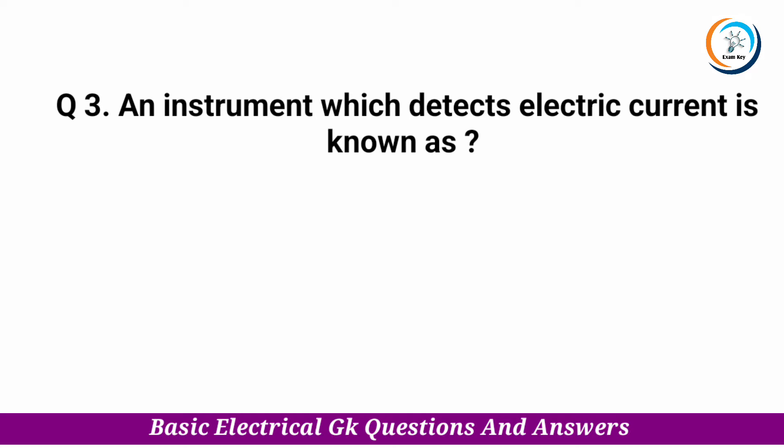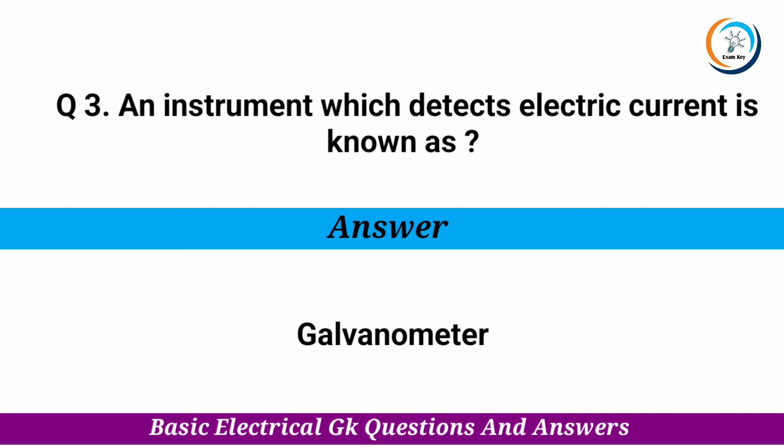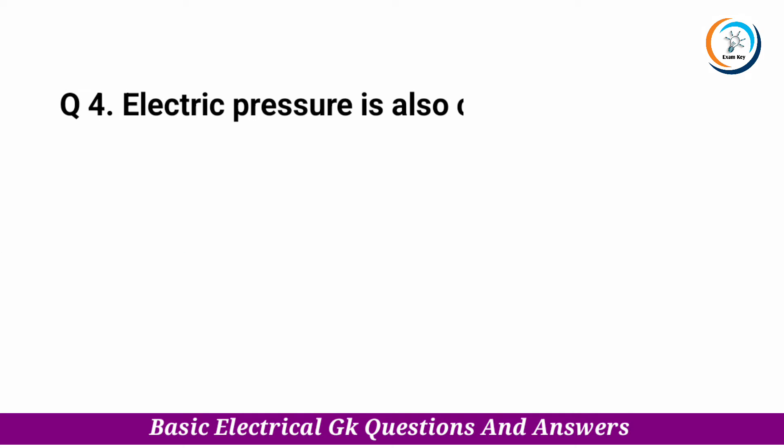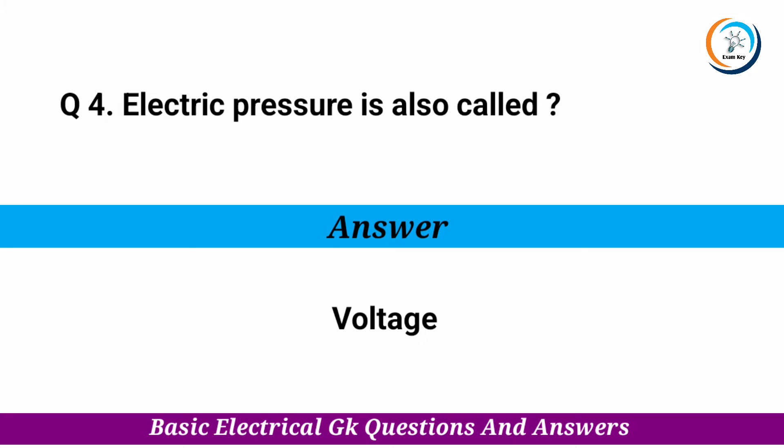An instrument which detects electric current is known as — Answer: galvanometer. Electric pressure is also called — Answer: voltage.